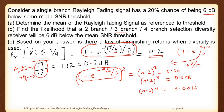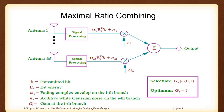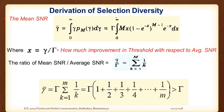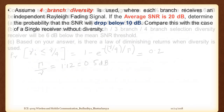Now let us see what happens with maximal ratio combining. It is quite imperative to understand how MRC is better compared to selection diversity with respect to instantaneous SNR calculation. In selection diversity we had the average SNR equal to capital gamma multiplied by a factor of 1 by K. The more the number of branches or antennas we consider, it will eventually not be that effective after a certain period - it is 1 by 2, 1 by 3, 1 by 4, 1 by 5, and 1 by 20 won't affect much. That is what makes MRC much better.